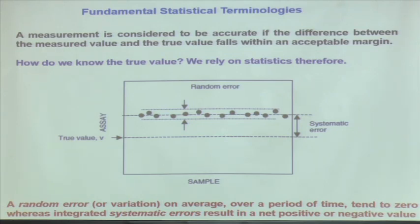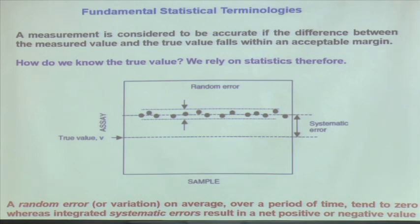For example: I want to know the average velocity of water coming through the kitchen tap — how do you do it? You take a bucket, you know the volume, look at your watch, measure how much time it takes to fill up. So I know the average flow rate, then you measure the cross-sectional area by scale, and I can easily calculate the average velocity.